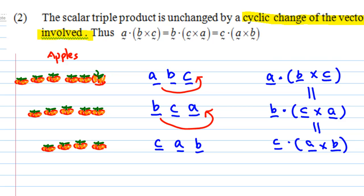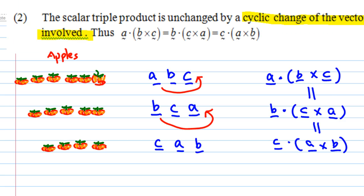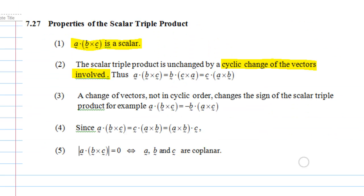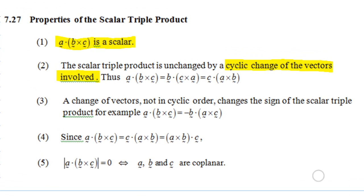Now let's look at the third properties. Third properties says that what happens if the change is not in cyclic order? Then there will be change in sign. For example, A dot B cross C is negative of B dot A cross C. Why is it so? Because this change is not in cyclic order.